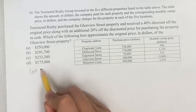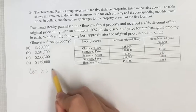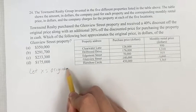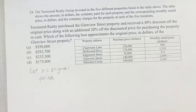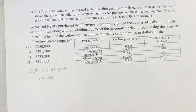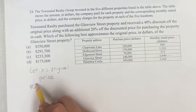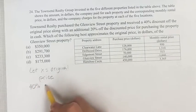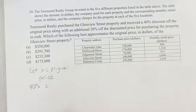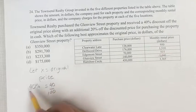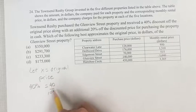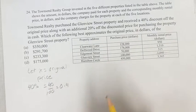So let's just say let x equal this original price, and let's find an equation that's going to allow us to solve for x. We're told that they received a 40% discount off the original price. A percent is a number out of 100, so we have 40 over 100, and this is equal to 0.4.